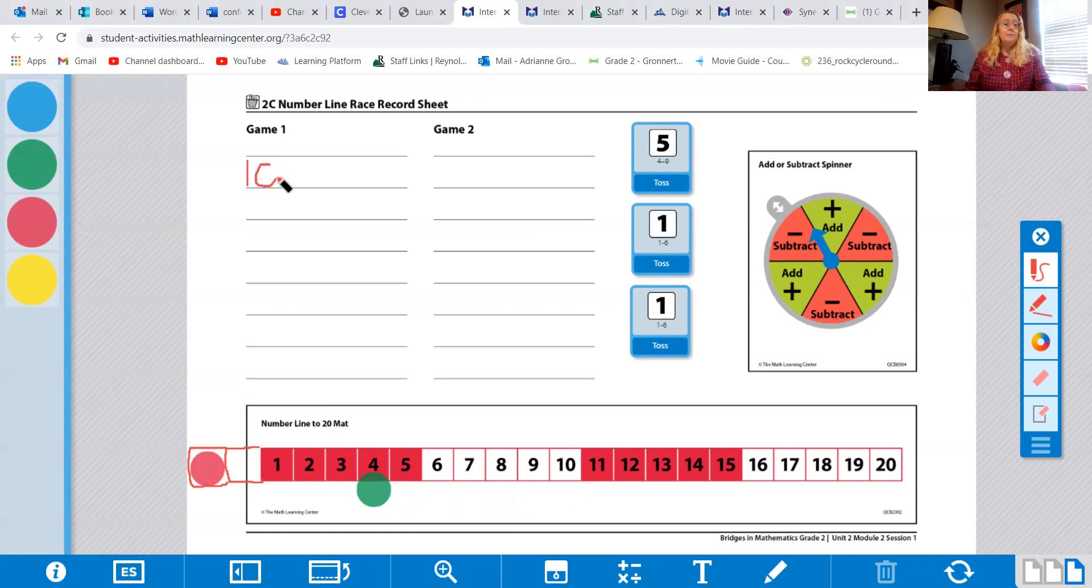We're going to write their equation down. They had 10 take away 6 equals 4.